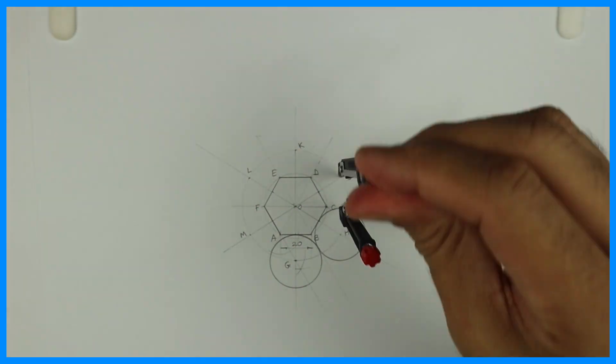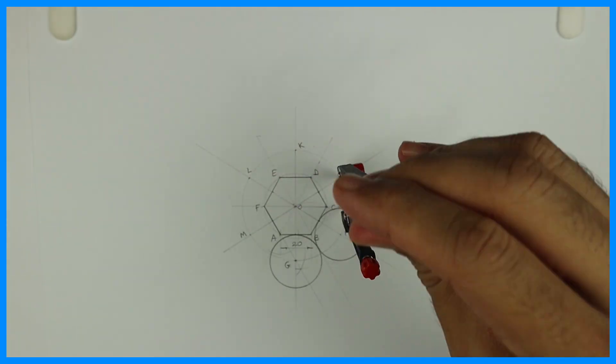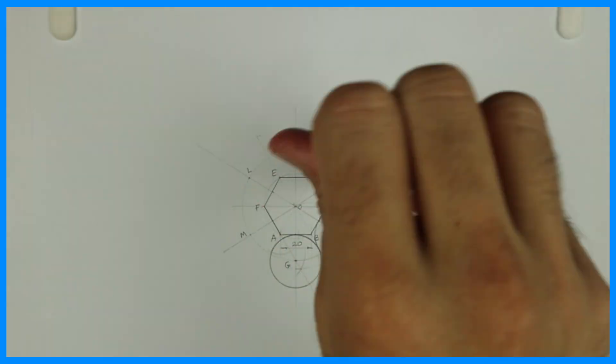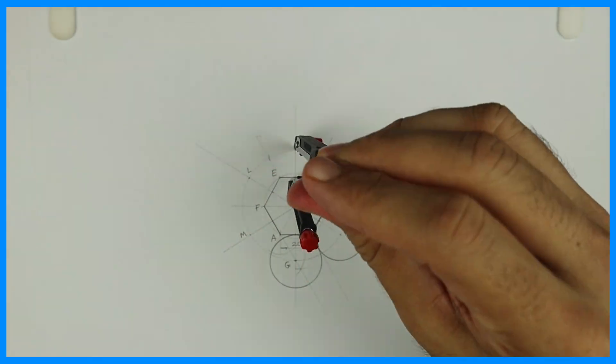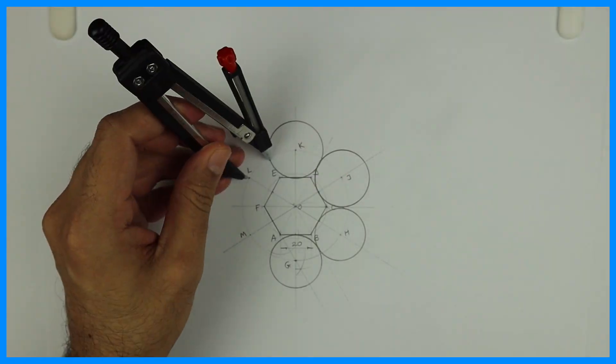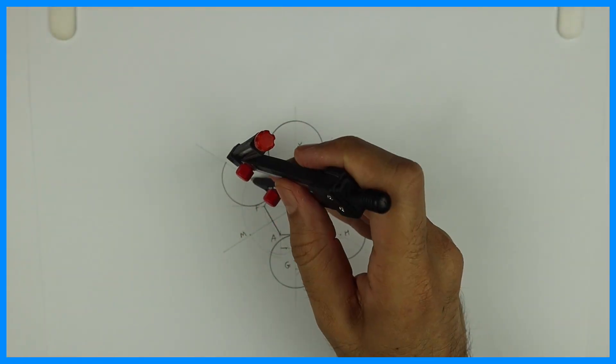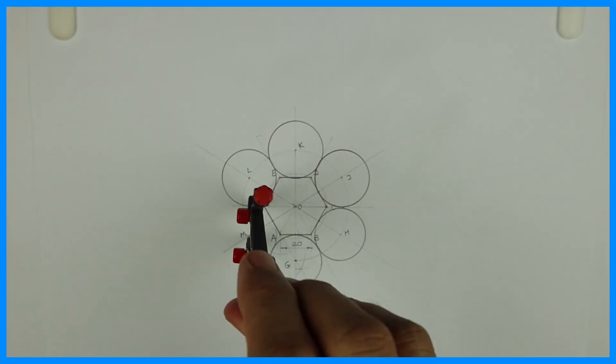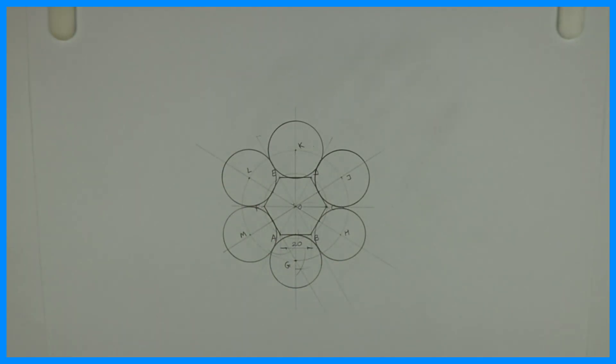Same way from J, from K, from L, keeping the same radius, and from M, so we'll get six circles outside the hexagon. Thank you.